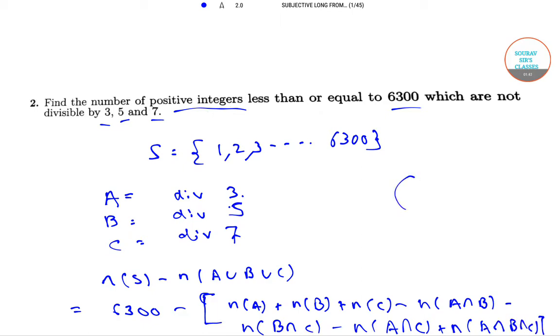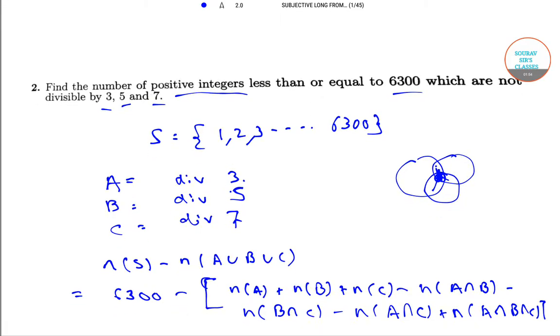That is, if these are the 3 sets ABC, we are subtracting this part, this part, this part, and this part, and then we are adding this small part like this.